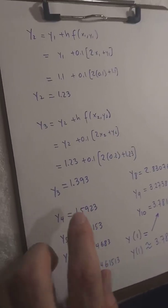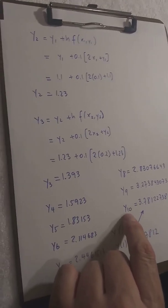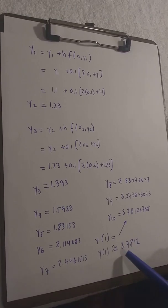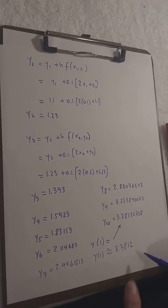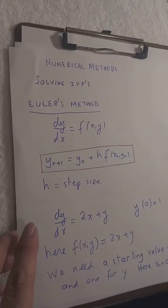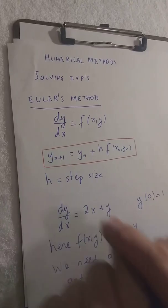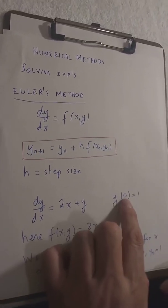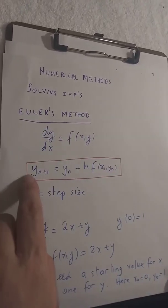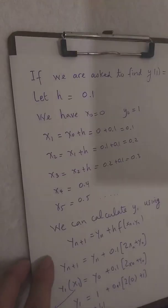So this is what we get for y3, y4, y5, y6, y7, y8, y9, y10. Y10 is y at x equals 1 — that's what we were asked to find — and it's equal to 3.78122738, which we round to 3.7812. This is the approximate value of y of 1. To recap: we start with one value of x and the corresponding value of y, plug them in, find the next value of y, and keep iterating until you get what you're looking for.